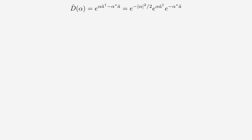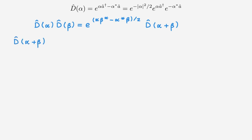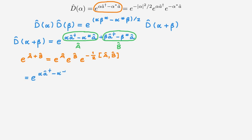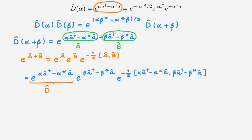The next relation I want to prove is that the product of two displacement operators D(α) and D(β) equals a phase factor times another displacement operator D(α+β). To prove this, we start with the displacement operator of α plus β, write out this operator as a long exponential, and apply the Baker-Campbell-Hausdorff formula. In this case, one part is the A operator and the other is the B operator, giving an exponential that depends on α — which is D(α) — an exponential that depends on β — which is D(β) — and the exponential of the commutator.